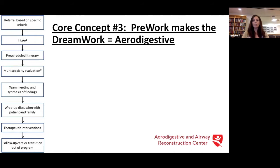We usually start with what's called a triple endoscopy — a single operative procedure with pulmonary, pediatric otolaryngology, and pediatric GI, plus or minus pediatric surgery, to take a look at the patient's entire aerodigestive system and make further studies and potentially therapeutics based on that. Once their treatment is completed, they have a transition out of the program back to their home provider — sometimes a pediatric otolaryngologist, sometimes a gastroenterologist, but most often whoever referred the patient to the program.